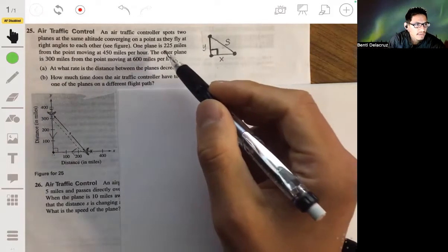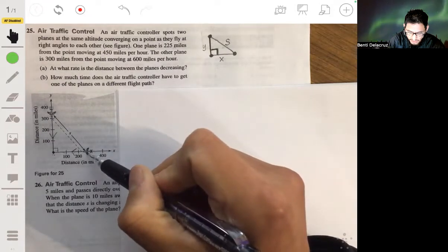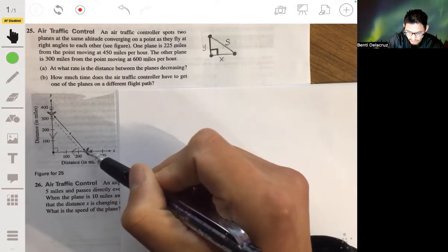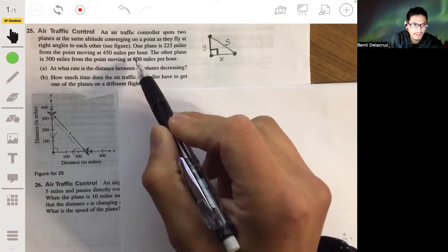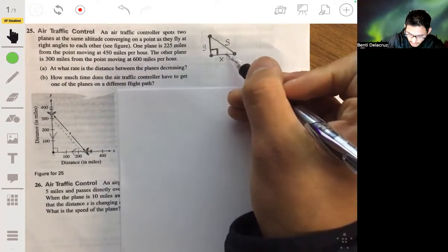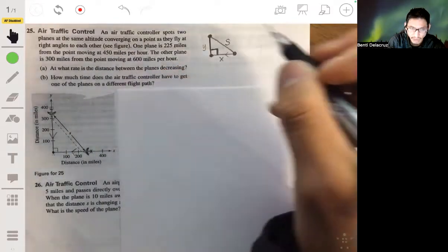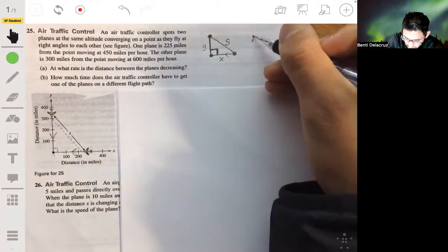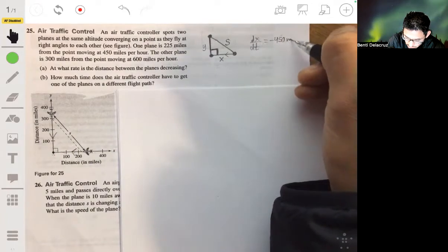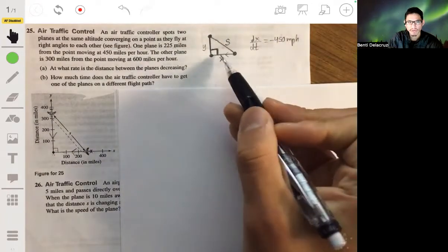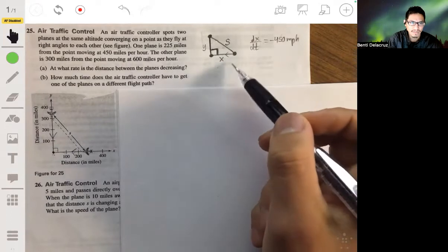And so now we have that one plane is 225 miles from the point, and so that would be X. But that's this plane, and that's what this plane is moving at - it's moving at 450 miles per hour. So the change in X is going to be negative 450 miles per hour. Remember, it's negative because we're thinking about this as like the X axis, and moving to the left is moving in the negative direction.